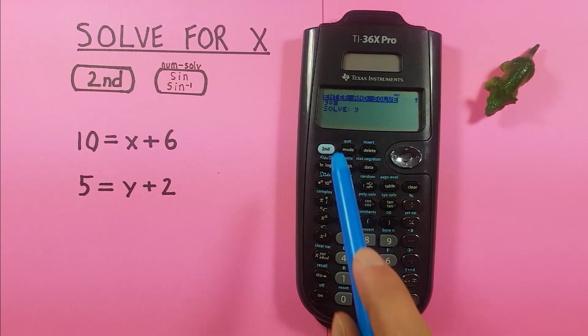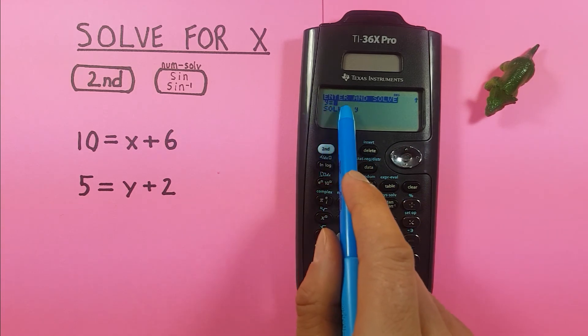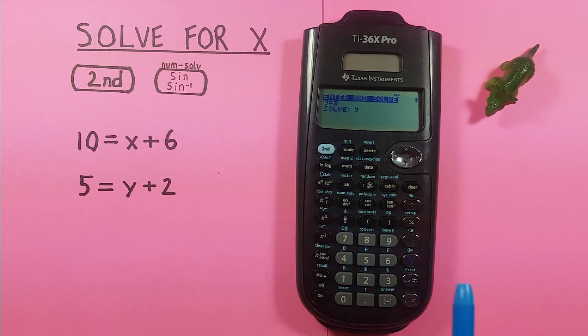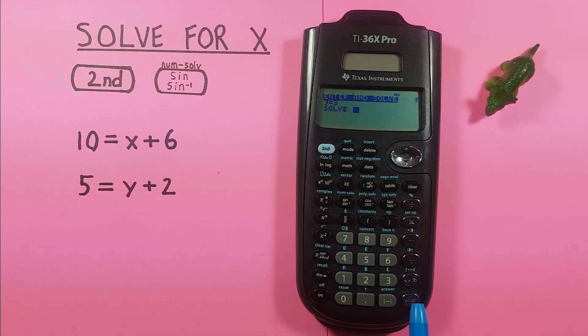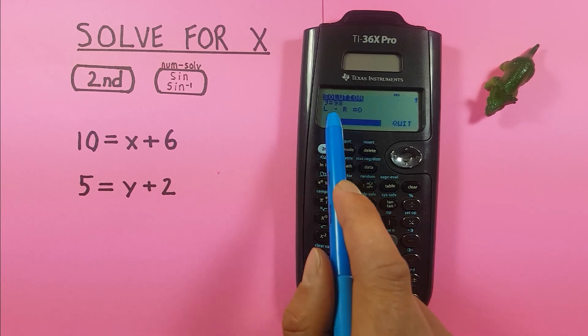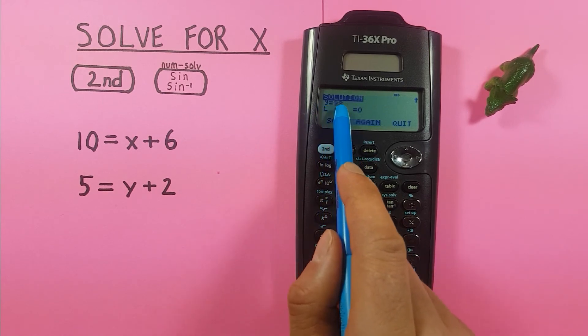If we press enter we see y equals 3 right now because that was the last y we saved. And if we press enter again and again it'll solve and we see we get y is equal to 98.